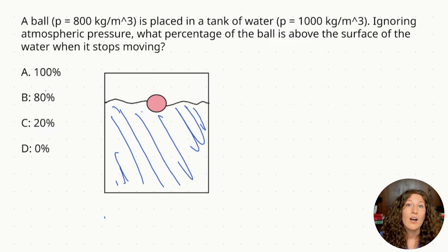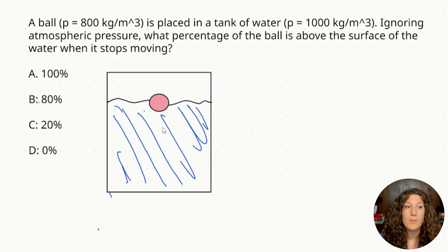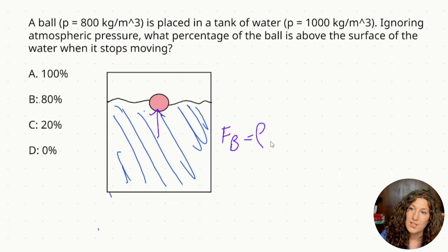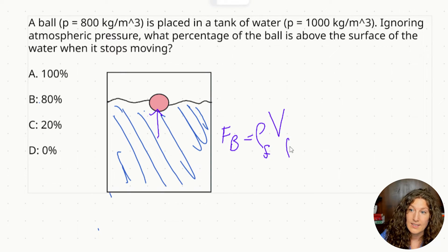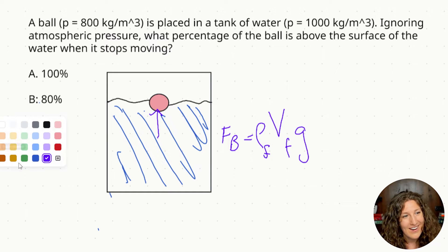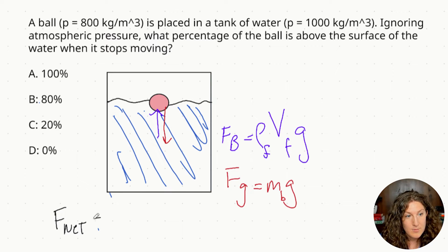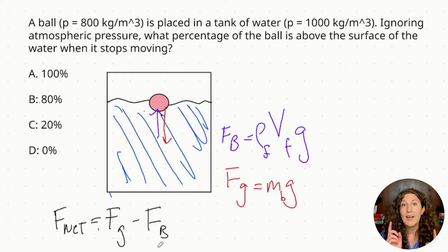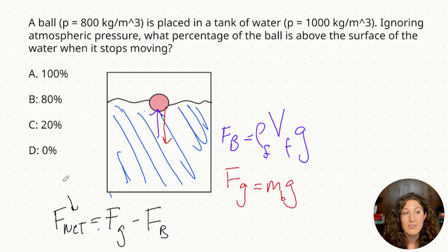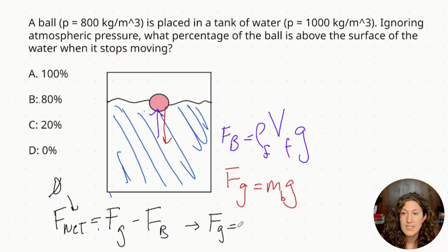Let's start by identifying where our buoyant force and gravitational forces are and how we can rearrange those equations. The buoyant force points up: FB equals density of the fluid times volume of fluid displaced times gravity. The gravitational force of the ball points downward: FG equals mass of the ball times gravity. We know the net force equals the gravitational force minus the buoyant force. The ball is not moving, which means zero acceleration and therefore net force equals zero. So we can rearrange: the gravitational force equals the buoyant force.